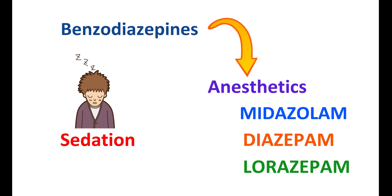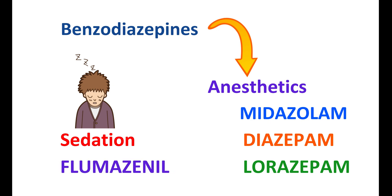In order to limit the sedation and increase the alertness in people, Flumazenil can be given which acts as an antagonist to the Benzodiazepines. Thereby, it can reduce the sedative effect produced by these Benzodiazepines given as IV anesthetics.